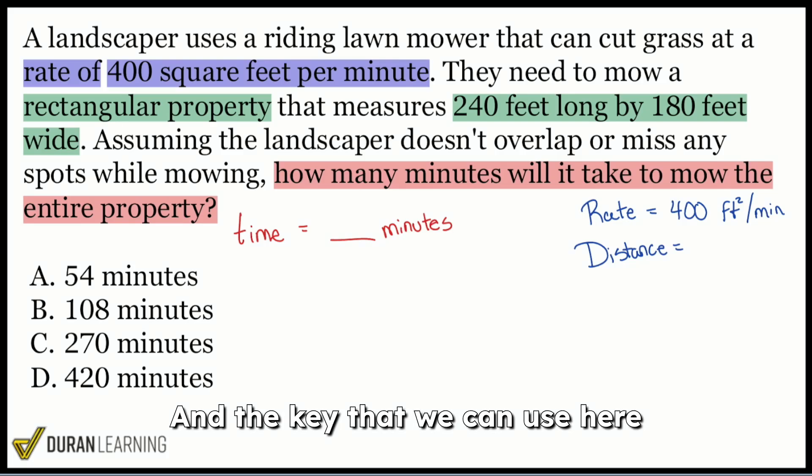And the key that we can use here is this. Look at the rate. Remember that your rate is always going to be distance per time. So your rate is your feet squared. So that's what we're trying to accomplish. Feet squared over time, which is minutes. And again, you see your time right here, minutes. So the distance needs to be square feet.